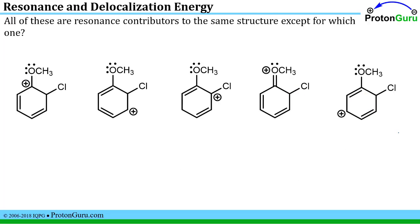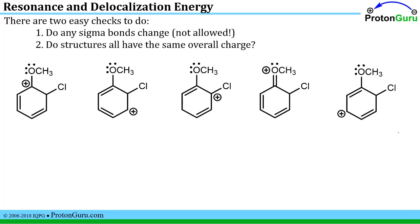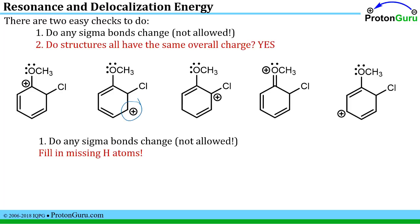Here's another relatively common type of question you see on a multiple choice test. All of these are resonance contributors of the same structure except for which one? And again, there are two very easy checks you can do to assess whether any pair or set of structures are resonance contributors of one another. You check for the sigma bonds as we have in the past couple examples. And then you also can check to see if all the structures have the same overall charge. In this case it's very easy to check for the charge because all of these have just one cationic site on the molecule. So yes, all the structures have the same overall charge.